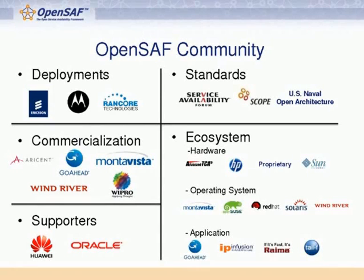Perhaps what is most interesting is the application areas, where a growing number of companies are publicizing their integration and use of OpenSaf. The left-hand side of the chart illustrates the strong backing from commercial companies. Commercialization ranges from distributions and productization of the technology to a variety of support and services. Based on community activity, it is well recognized that there are significant deployments underway, and we expect an uptick in deployments as more companies recognize the value of building on an industry-standard distributed framework.